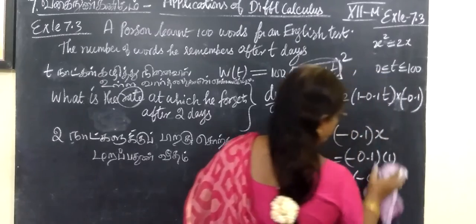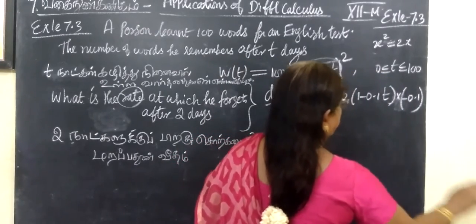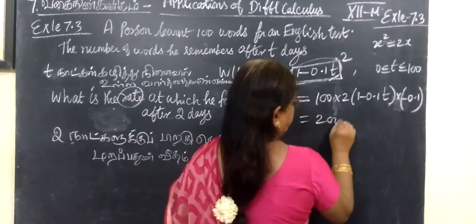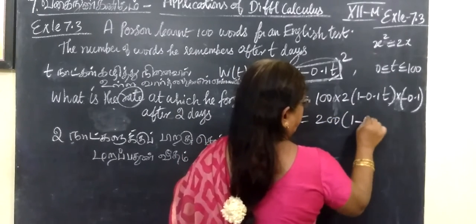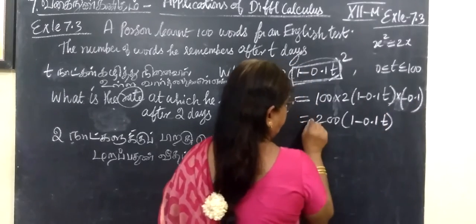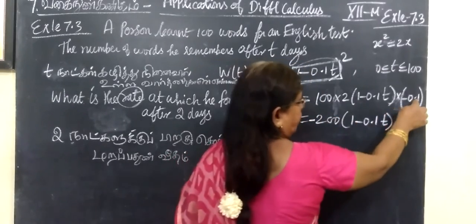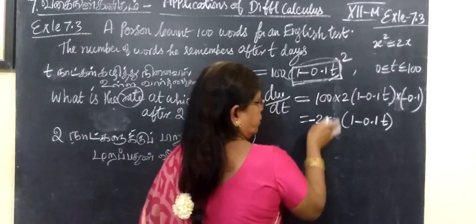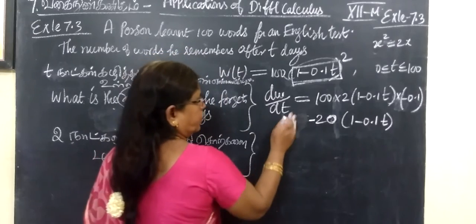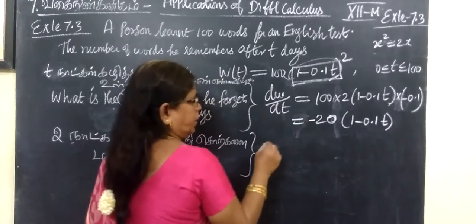x value differentiation 1 equal to minus 0.1. So in this case, minus 0.1, if we multiply 2 into 1 minus 0.1t, that is dw by dt.